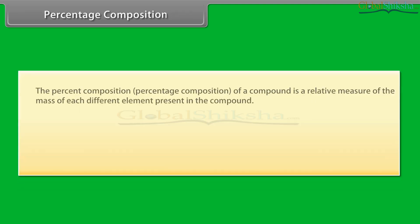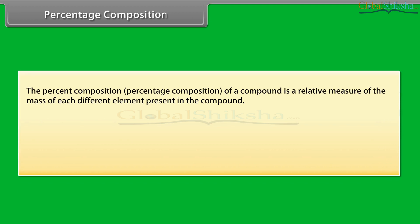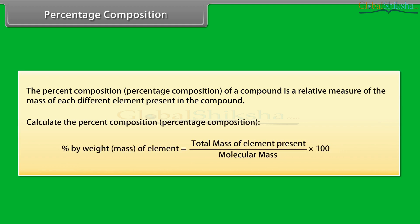Percentage composition: the percent composition of a compound is a relative measure of the mass of each different element present in the compound. Percentage composition by weight equals the mass of the element divided by the molecular mass, multiplied by 100.